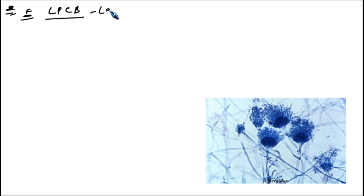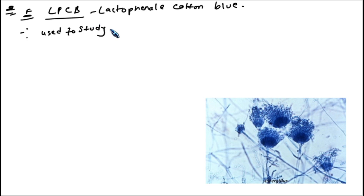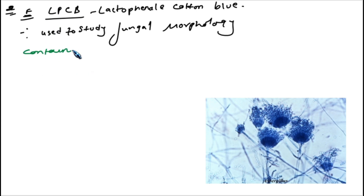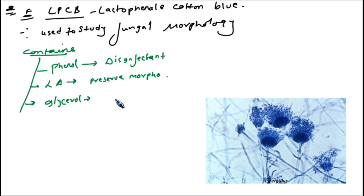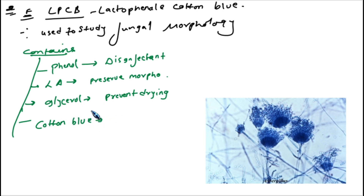After histopathological stains, the next stain is LPCB — Lactophenol Cotton Blue. This stain is used to study fungal morphology after culture. It contains four things: phenol, which acts as a disinfectant; lactic acid, which preserves the morphology of fungi; glycerol, which prevents drying of fungi; and cotton blue, which stains fungal elements blue.